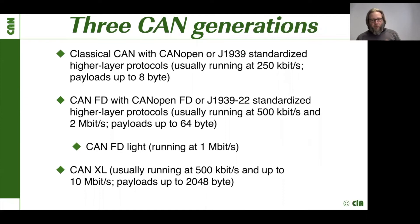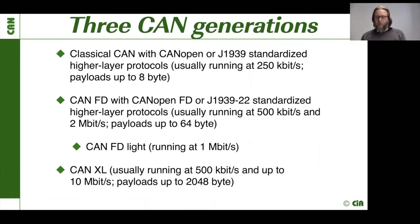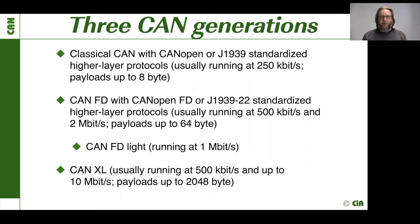For that reason, we now have three CAN generations. We have classical CAN with J1939 or CANopen as a higher layer protocol. In those classical CAN networks, we are typically running the networks at 250K, or in some areas at 500K, and we are able to transmit payloads of 8 bytes.